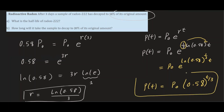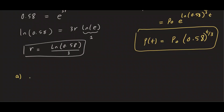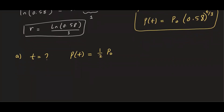Now that we have the model, we can answer part A and part B. Part A: we want to know the half-life — what is T so that the amount is reduced to half its original amount? We set up: (1/2)·P₀ = P₀·(0.58)^(T/3). We're solving for T.